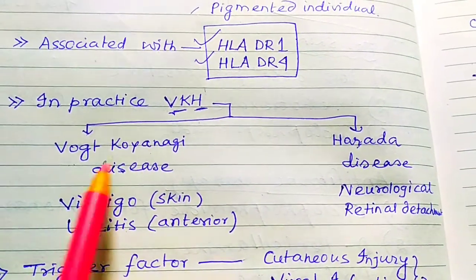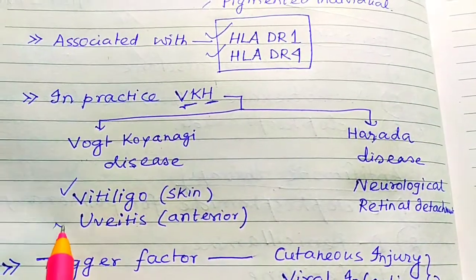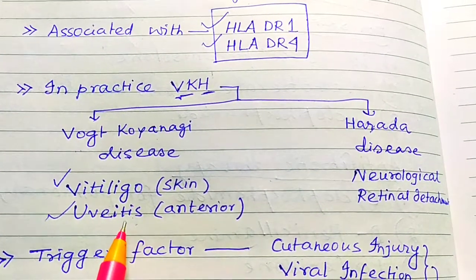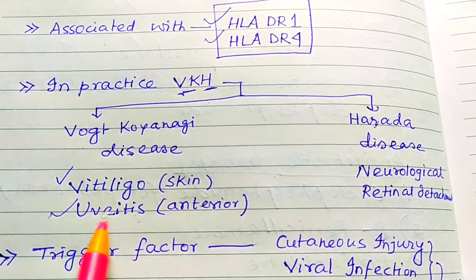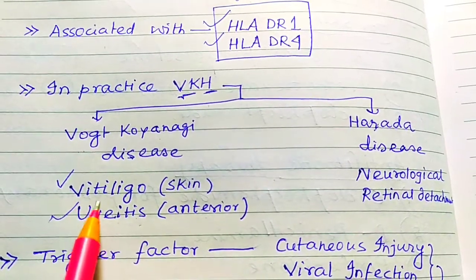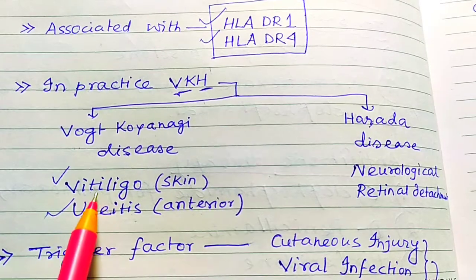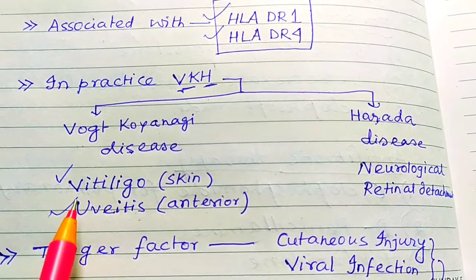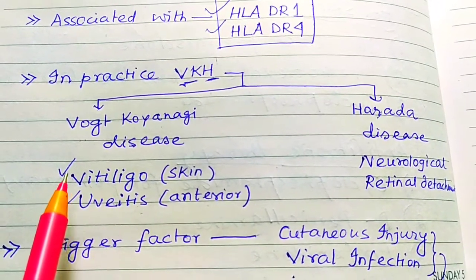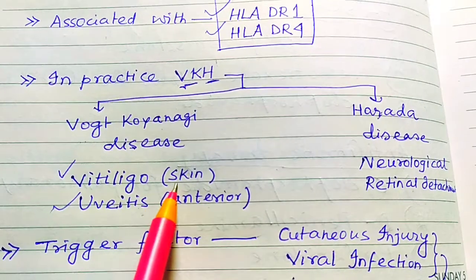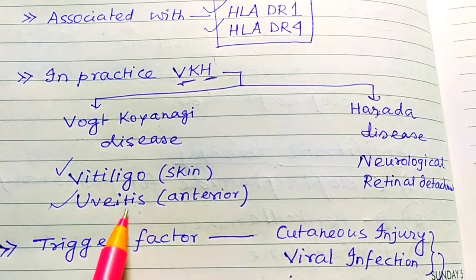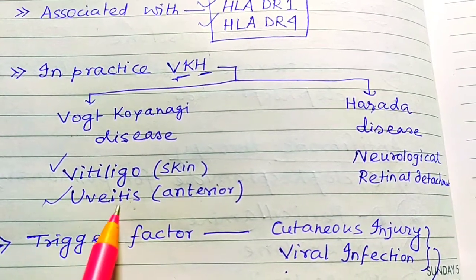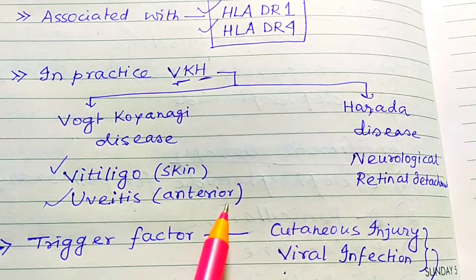In Vogt-Koyanagi disease, we have vitiligo and uveitis — basically anterior uveitis, which is inflammation of the middle layer of the eye. Vitiligo means skin pigmentation is lost, because this disease affects the melanocytes. So vitiligo in the skin and anterior uveitis — the middle layer of the eye which contains the choroid — will be affected.